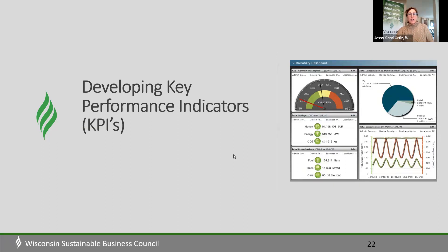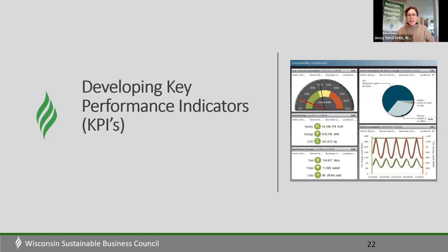Developing key performance indicators — KPIs. I'm sure your company creates some sort of KPIs. If they're not in sustainability, there are other metrics they're tracking. I highly recommend starting this process by understanding what they're already tracking — how can the data you're collecting match the way your company already reads and sees data?